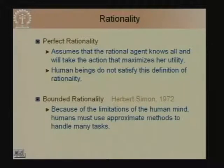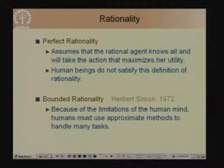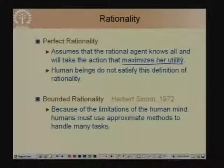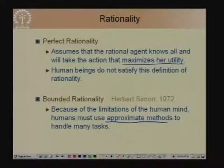The concept of bounded rationality was introduced by Herbert Simon of CMU in 1972 in his theory of economics. Bounded rationality says that because of the limitations of the human mind, humans must use approximate methods to handle many tasks. Bounded rationality does not aim at maximizing the absolute utility of the agent, because that may not be achievable given realistic resource bounds. Instead, rationality concentrates on using approximate methods where appropriate so that the agent can take the best action given its resource limitations and what it already knows.